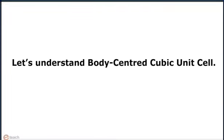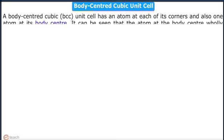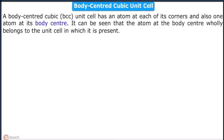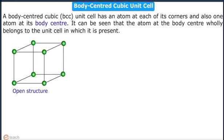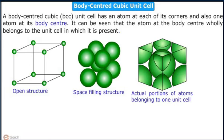Let us now study about body centered cubic unit cell. A body centered cubic unit cell has an atom at each of its corners and an atom at its body center. The atom at the body center wholly belongs to the unit cell in which it is present. The body centered cubic unit cell has been depicted in 3 different ways: the first is open structure, the second is space-filling structure, and the last shows the actual positions of atoms belonging to one unit cell.